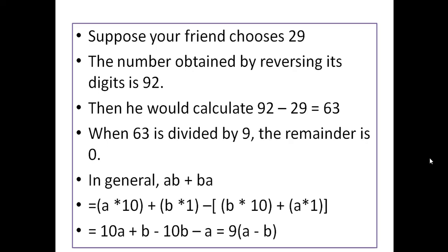In general form, AB reversed is BA. Writing them out: (A×10 + B×1) minus (B×10 + A×1). After solving, you get 9×(A−B). So whatever number you take, the difference is divisible by 9, and dividing by 9 leaves remainder 0.